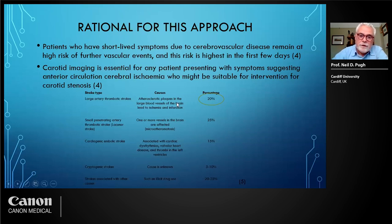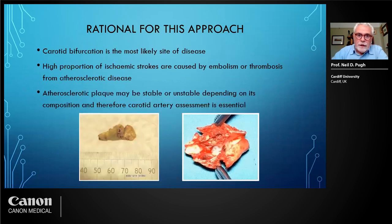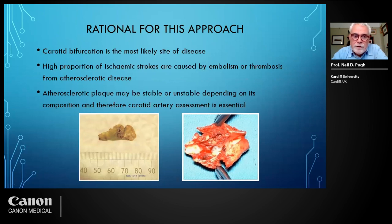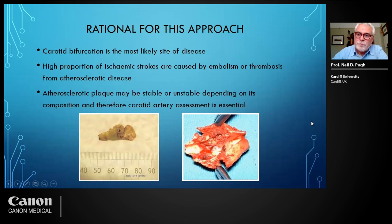Any patient with an ischemic stroke requires timely carotid artery imaging. Large artery thrombotic stroke occurs in about 20% of the population, and one of the major vessels implicated is the carotid artery. The carotid bifurcation is the most likely site of disease and is very amenable to ultrasound imaging. A high proportion of ischemic strokes are caused by embolism or thrombus from atherosclerotic disease. Atherosclerotic plaques are very complex in their makeup — they may be stable or unstable depending upon their composition. So the assessment of the carotid artery and plaque is of prime importance.